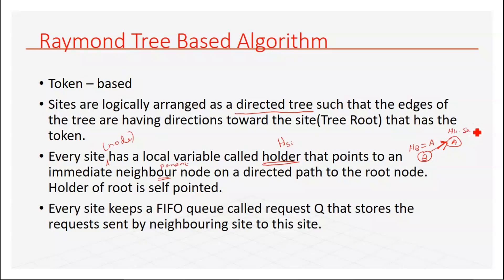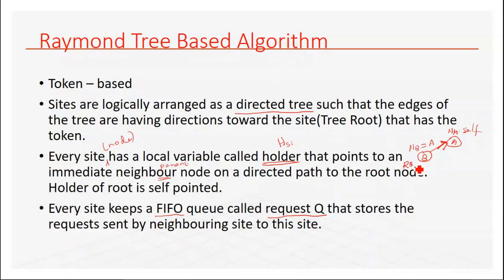The holder of the parent node is set to self, because A is the root here, so its holder variable value will be itself — it is pointing to itself. Additionally, every site keeps a FIFO queue called the request queue. There will be a request queue RQ for every site. It is a FIFO queue which stores requests sent by neighboring sites.